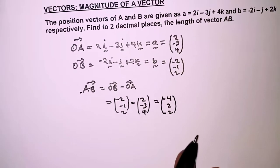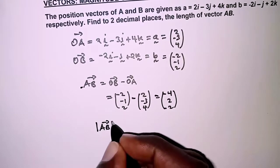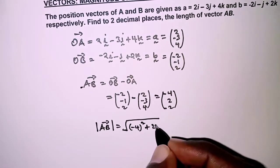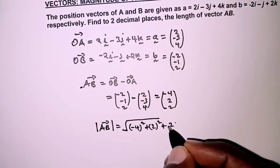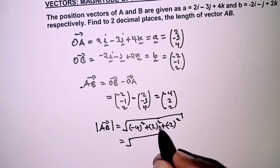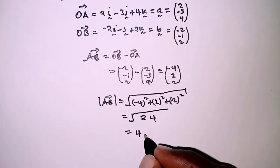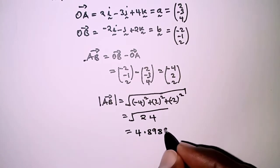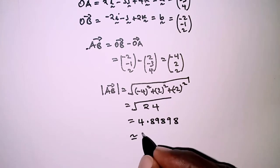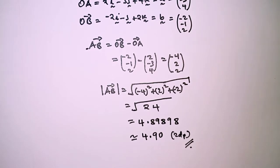Given AB, we can therefore get the magnitude or the length of AB as follows. The length of AB is obtained by finding the square root of the squares of these components: √((-4)² + 2² + (-2)²). This is the square root of 16 + 4 + 4, so that is √24, which equals 4.89898, and to 2 decimal places that is 4.90.